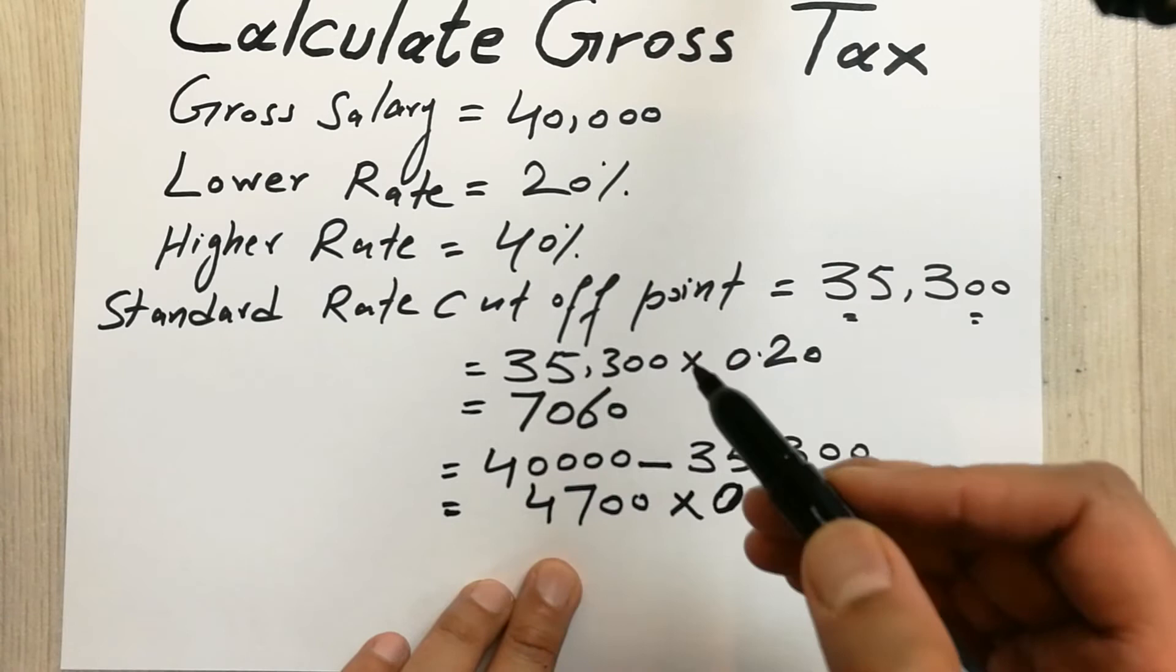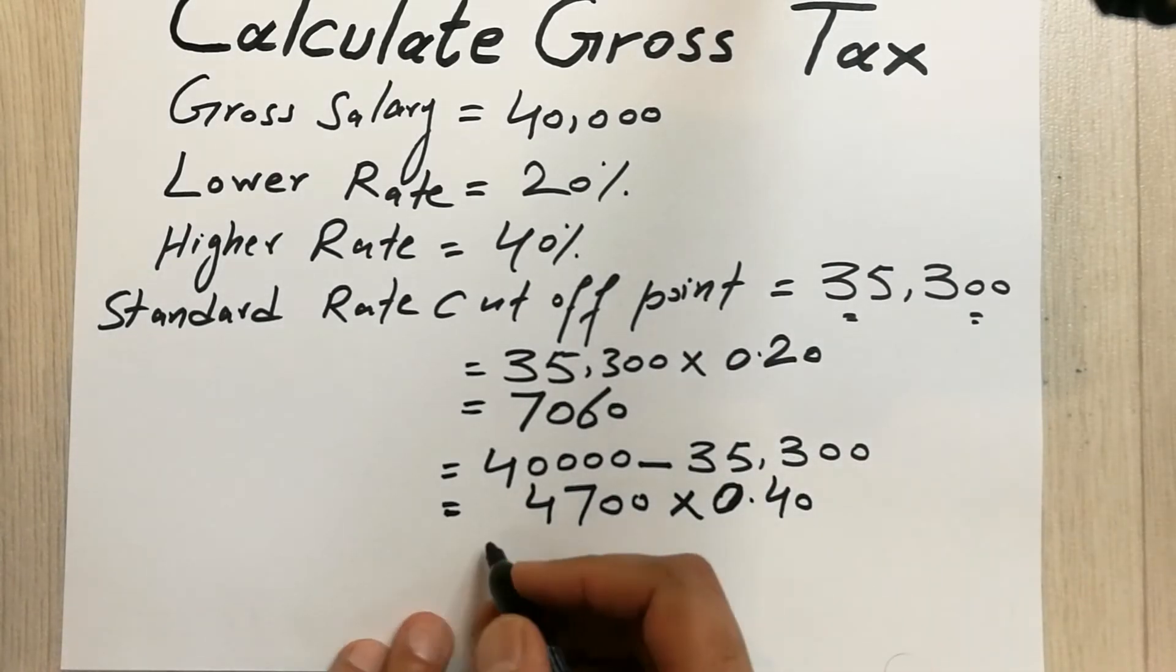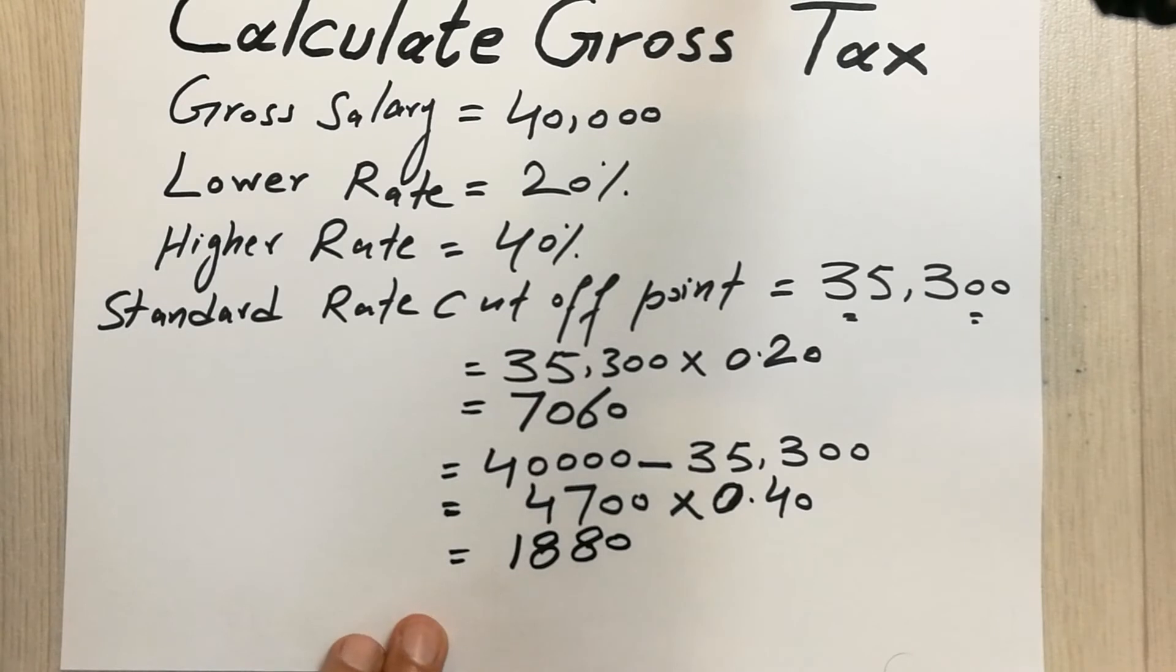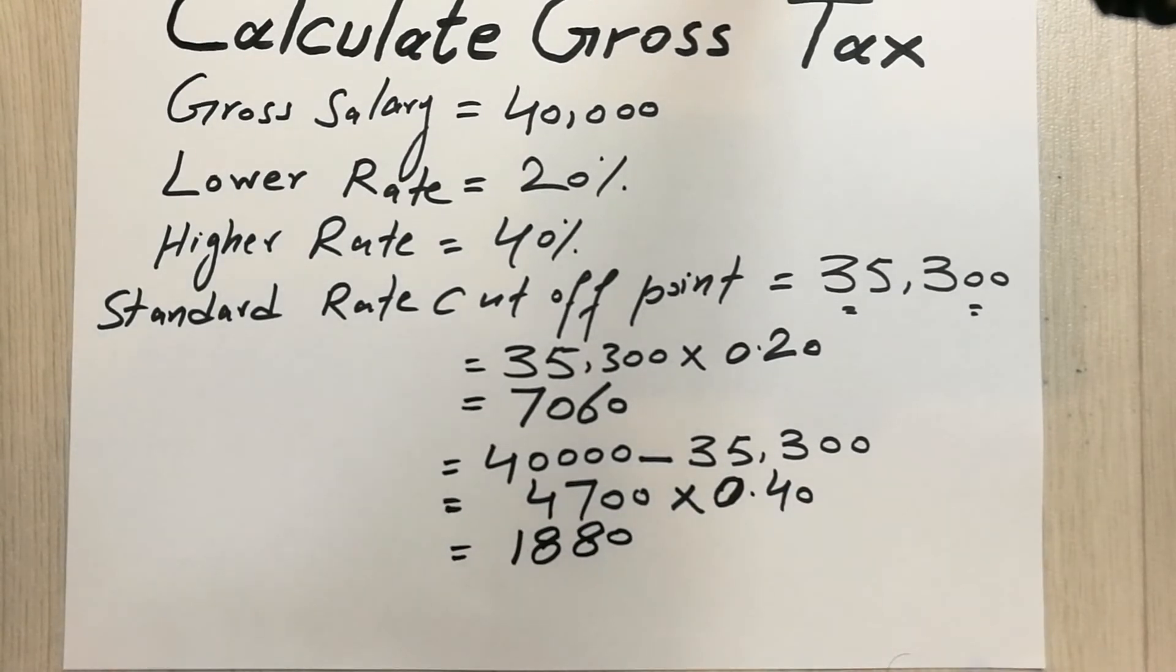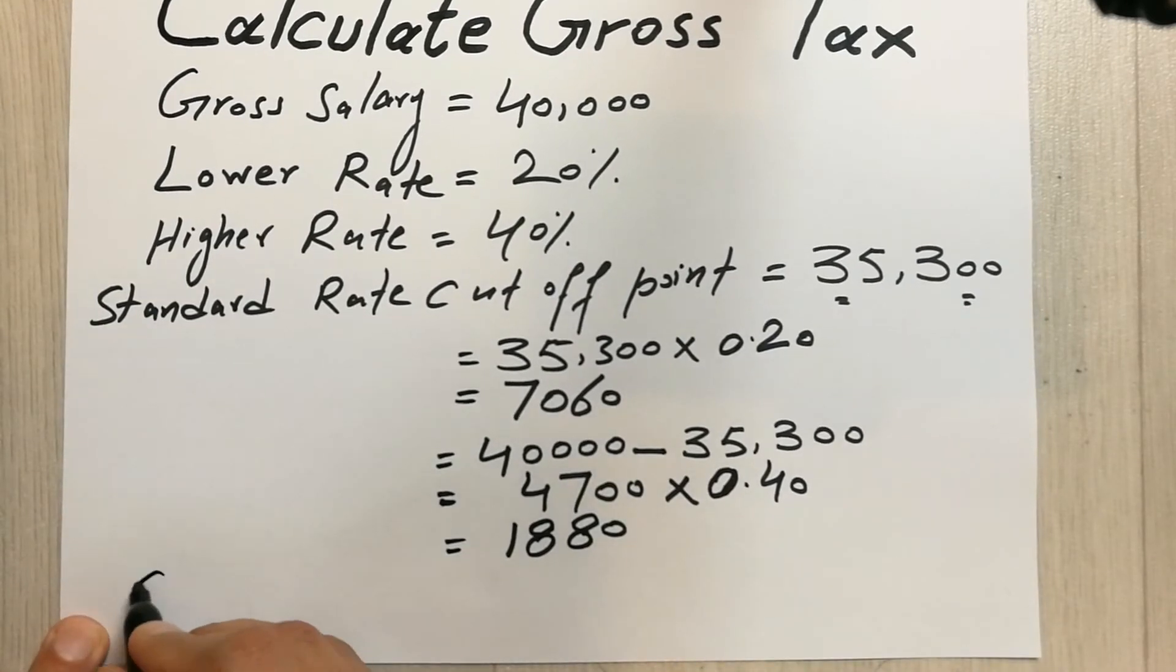This 40% we divide with 100, our answer will be 0.40. So we have to multiply these and the answer will be 1,880. Now simply we have to calculate the gross tax.